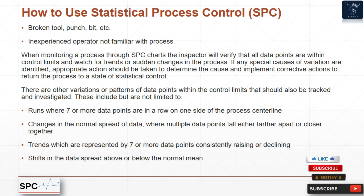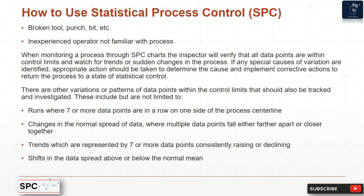When monitoring a process through SPC charts, the inspector verifies that all data points are within control limits and watches for trends or sudden changes. If any special causes of variation are identified, appropriate action should be taken to determine the cause and implement corrective actions to return the process to a state of statistical control. Other patterns within control limits that should also be tracked include: runs (seven or more consecutive data points on one side of the center line), changes in the normal spread of data, trends (seven or more data points consistently rising or declining), and shifts in the data spread above or below the normal mean.